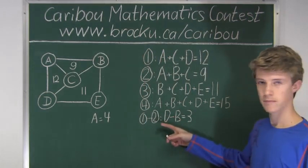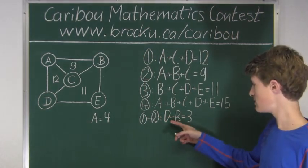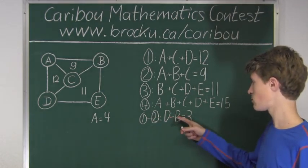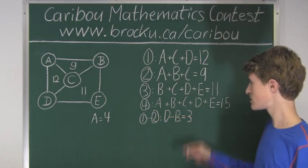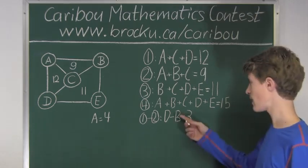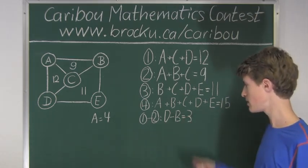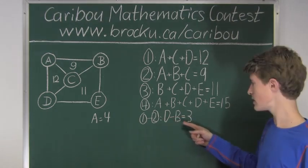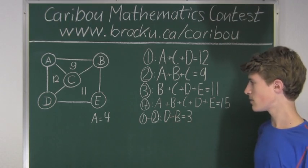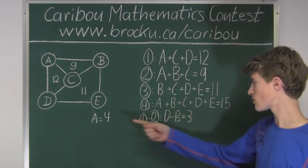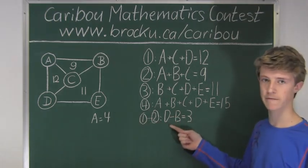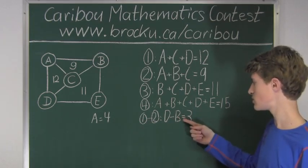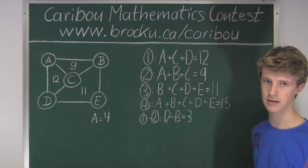Looking at D minus B equals 3, we know D must be 3 greater than B. The only possible values are B equals 1 and D equals 4, or B equals 2 and D equals 5. But we already know A is 4, so D cannot be 4 and therefore B cannot be 1. So B must be 2 and D must be 5.